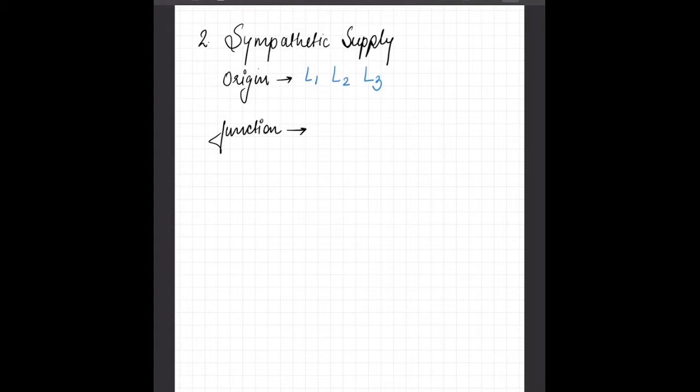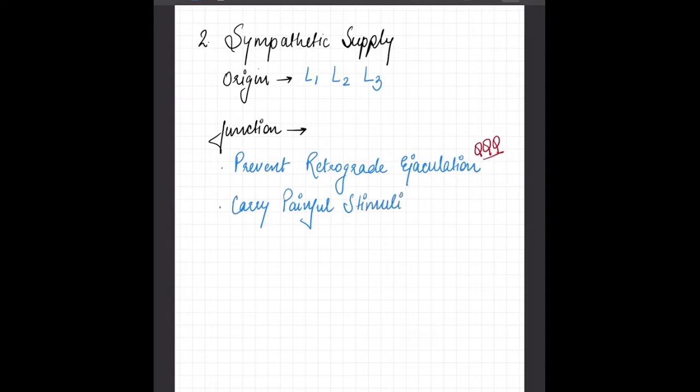The function of sympathetic supply: first, it prevents the retrograde ejaculation. And secondly, it carries painful stimuli from the urinary bladder. And the most important point is the sympathetic supply is least important for the urinary bladder, for the micturition.